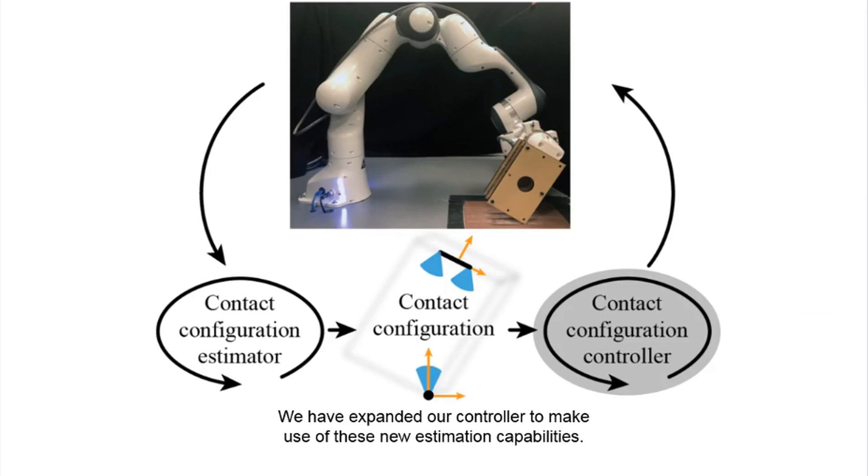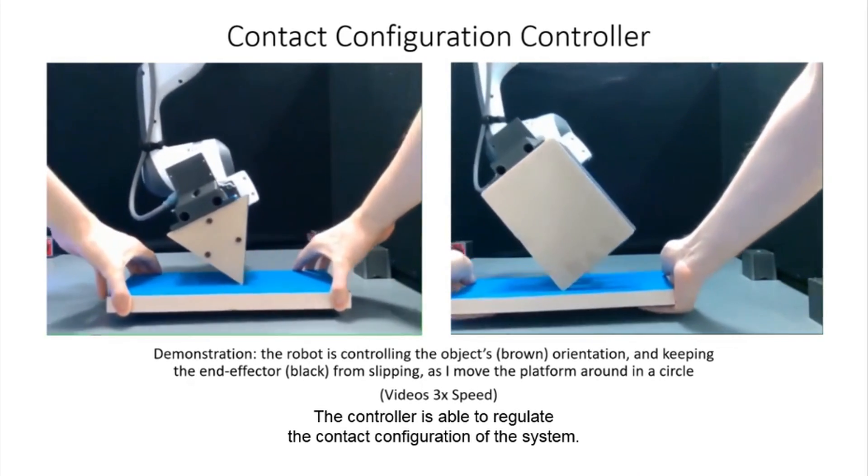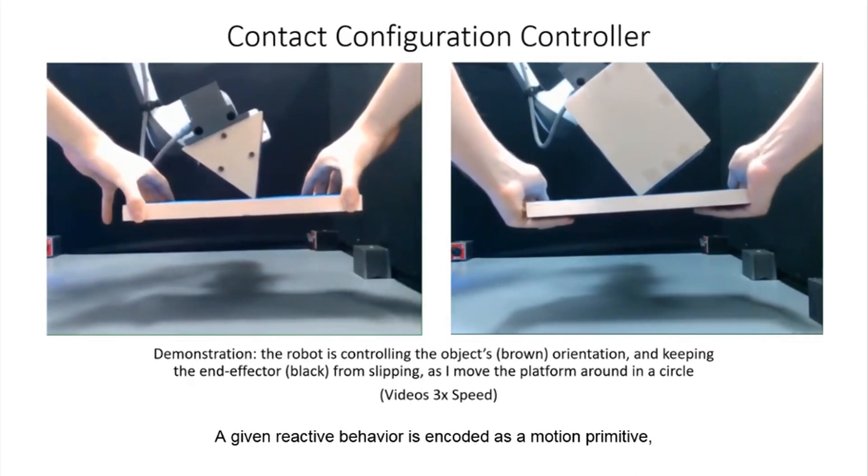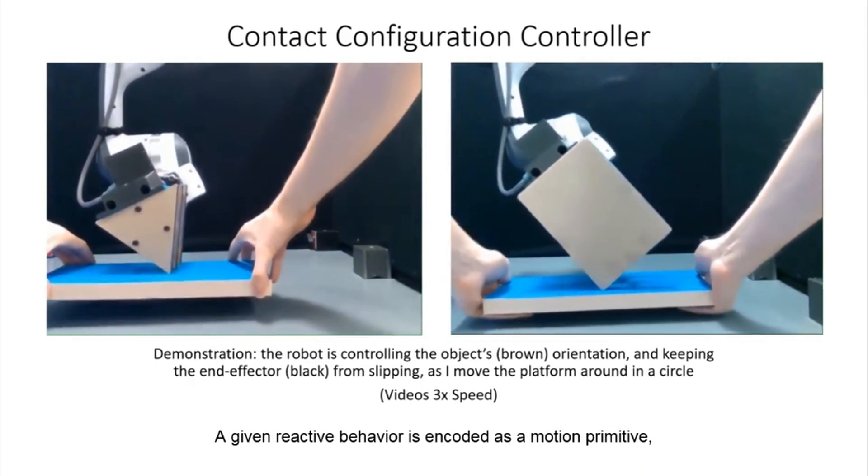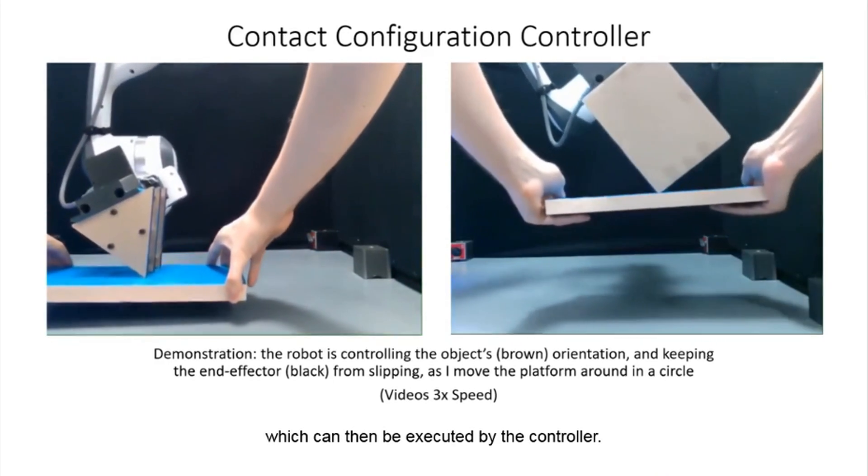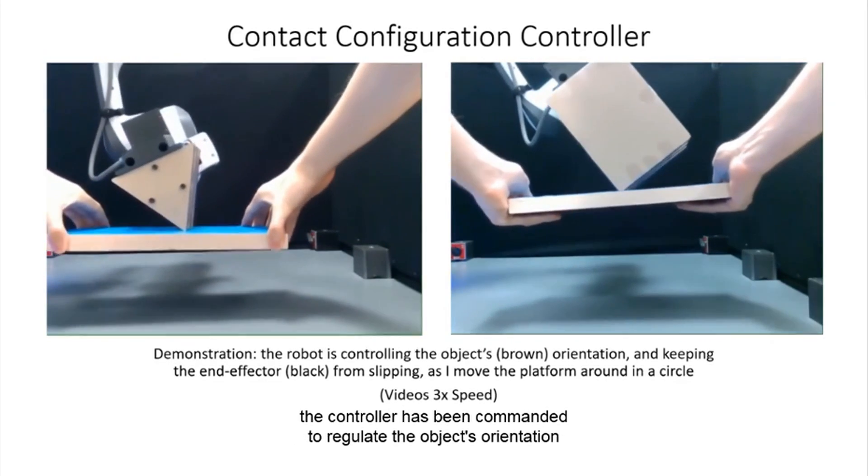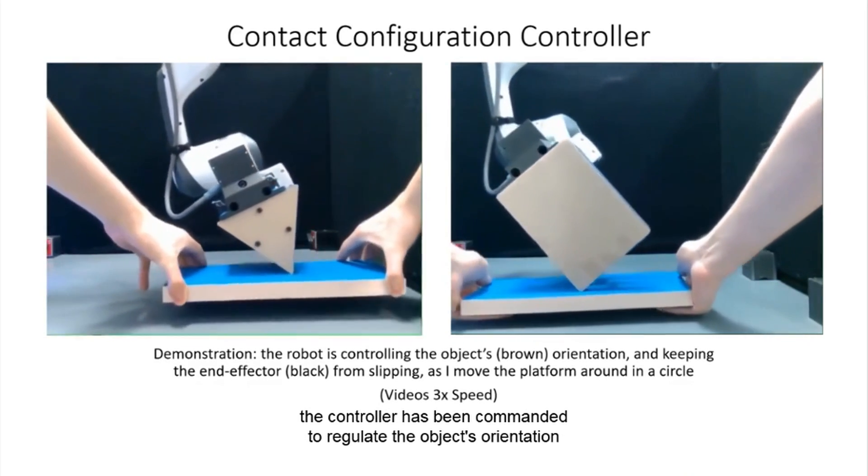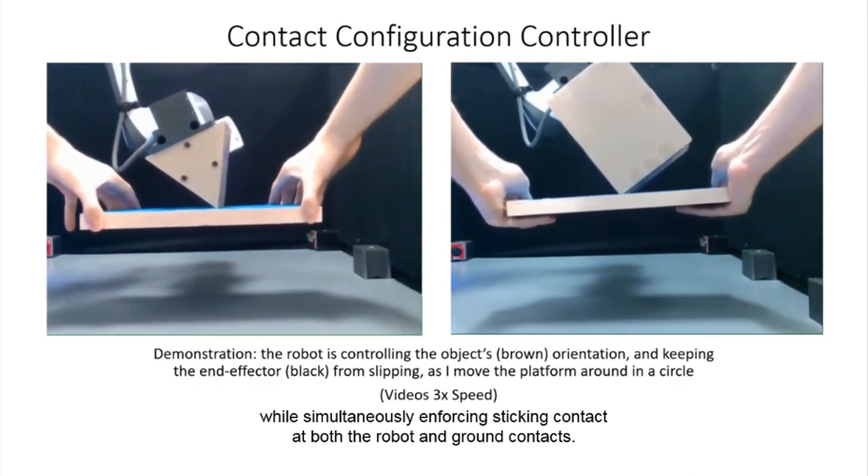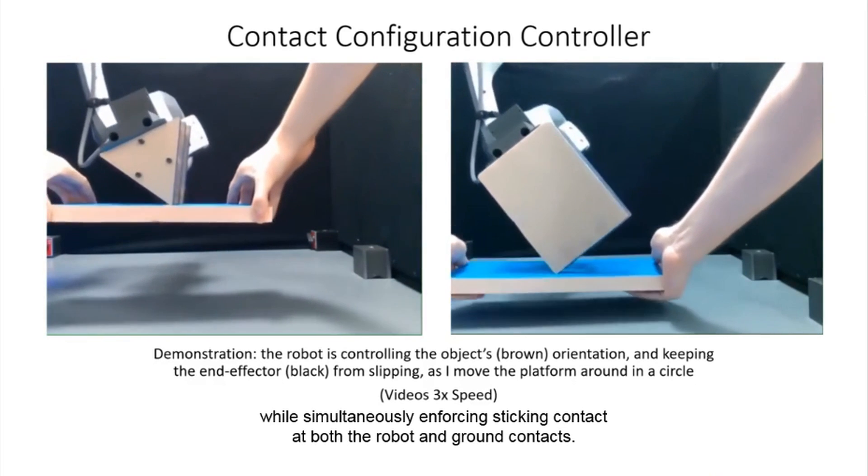We have expanded our controller to make use of these new estimation capabilities. The controller is able to regulate the contact configuration of the system. A given reactive behavior is encoded as a motion primitive, which can then be executed by the controller. For the motion primitive depicted in these videos, the controller has been commanded to regulate the object's orientation while simultaneously enforcing sticking contact at both the robot and ground contacts.